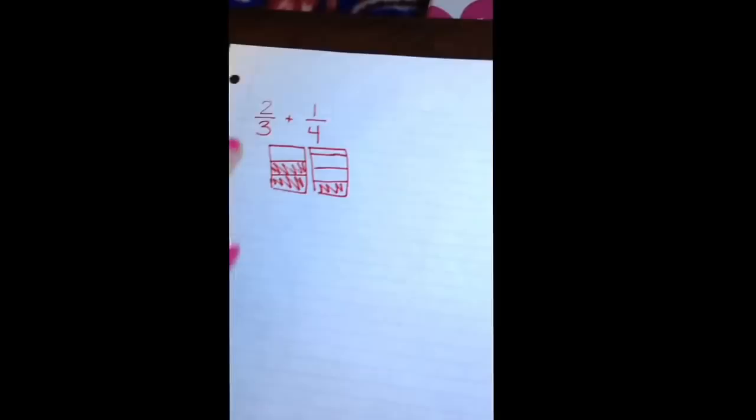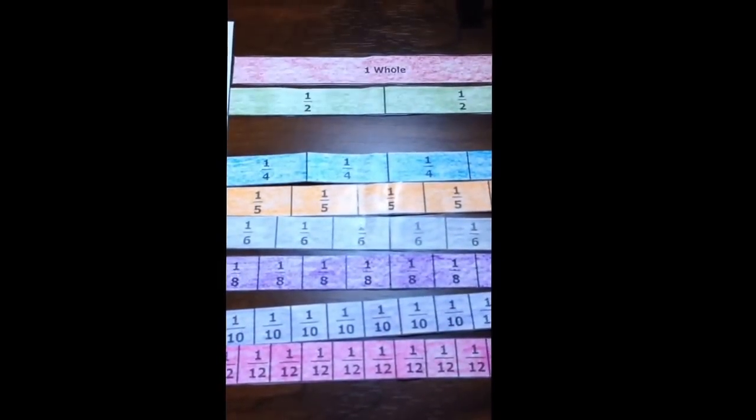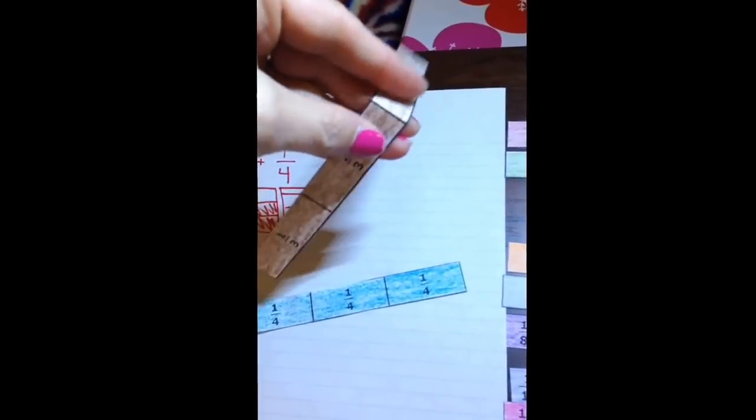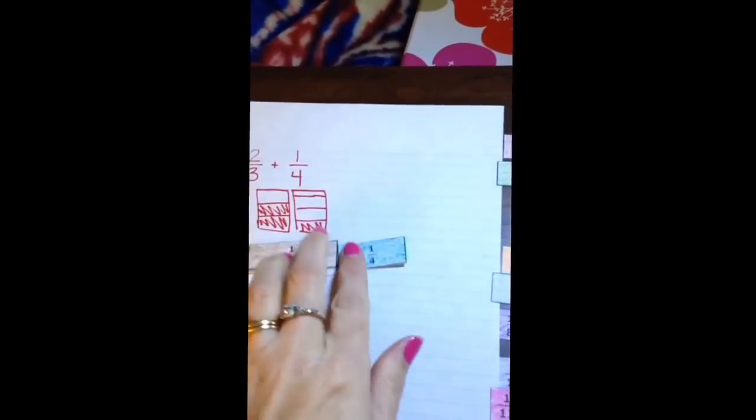Fraction strips make it easy to show same size pieces for thirds and fourths. So I'm going to get my fraction strip for thirds, and I'm going to get my fraction strip for fourths. And I only want two thirds, so I'm going to fold it right here. And I only want one fourth, so I'm going to fold this one and use just one fourth. And I'm going to put these next to each other so that I can see how much this is together.